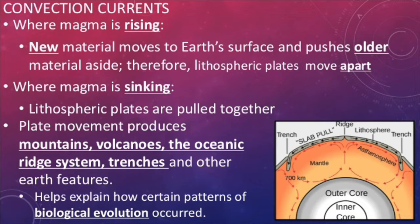Conversely, where magma is sinking, lithospheric plates are pulled together as the older crust is pulled downwards. This is how the crust itself gets recycled. The cycling of hardened and cooled magma to form the crust helps create mountains, volcanoes, the oceanic ridge system, and trenches.